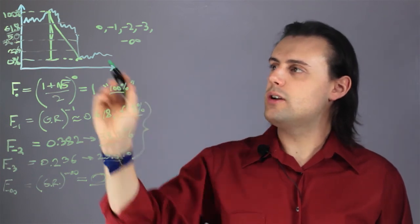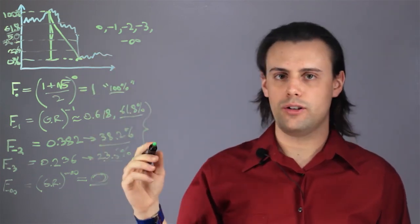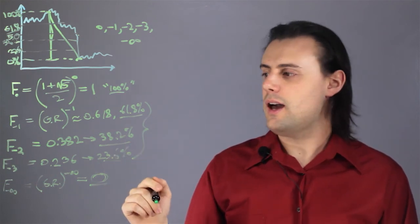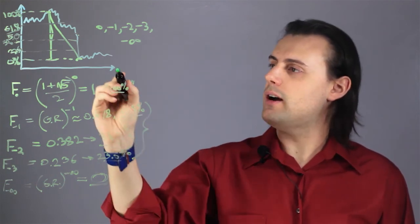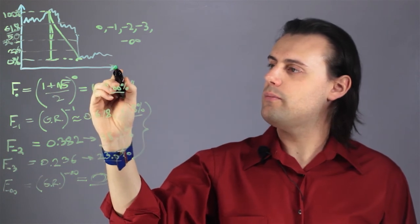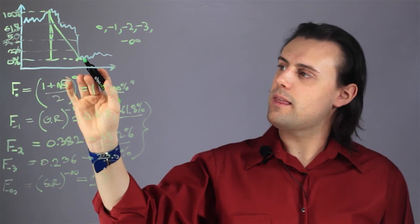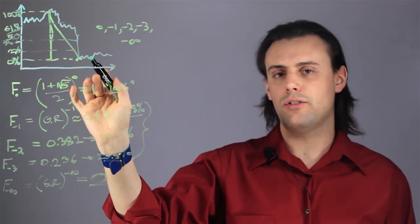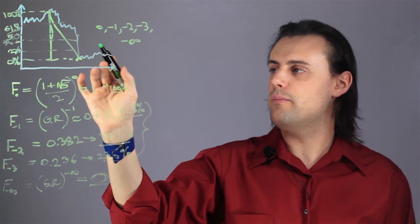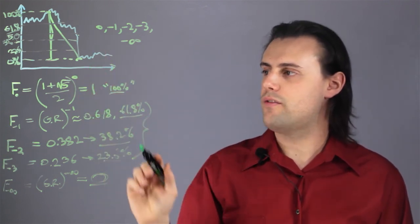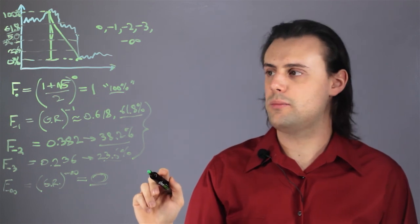Once you've done that, you can use this as a tool for determining what's called a support or resistance level. And the point behind support and resistance levels is to determine how far a price will increase to a certain level or decrease to a certain level. And this is essentially how Fibonacci retracements work.